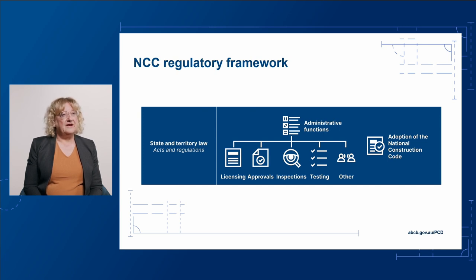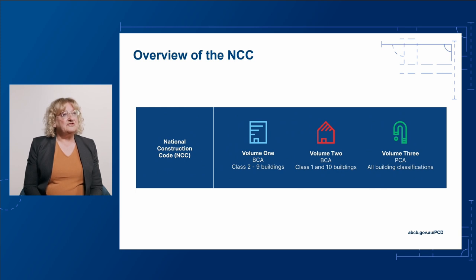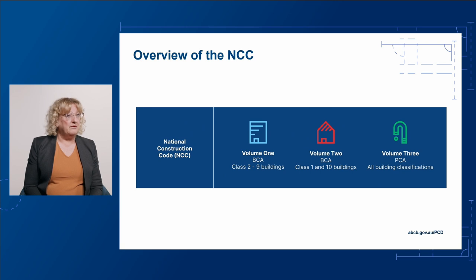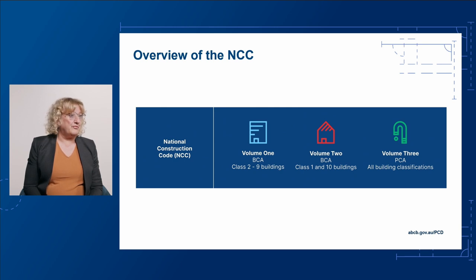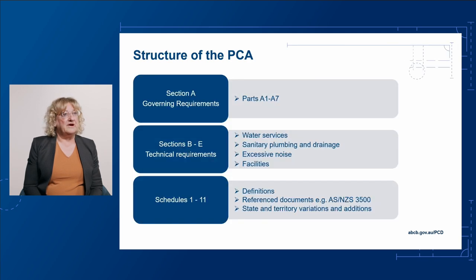The National Construction Code comprises three volumes. Volumes 1 and 2 are the Building Code of Australia or BCA. The Plumbing Code of Australia or PCA is Volume 3 of the NCC and it covers plumbing and drainage requirements for all classes of buildings. It applies to the design, construction and maintenance of plumbing and drainage systems in both new and existing buildings, prescribing the minimum required levels for design and construction. The requirements of the PCA aim to prevent injury, illness or loss of life, property or amenity as a result of failure of plumbing or drainage services.